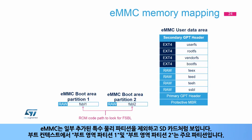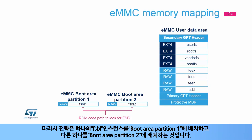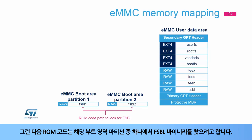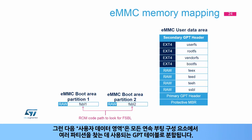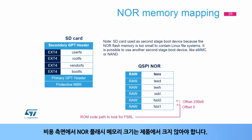An eMMC looks like an SD card, except for some additional special physical partitions. In the boot context, the boot area partition 1 and boot area partition 2 are the key partitions — the strategy consists of putting one FSBL instance in boot area partition 1 and another in boot area partition 2. The ROM code then directly tries to find the FSBL binary in one of those boot area partitions. The user data area is partitioned with a GPT table used by all consecutive boot components to find the several partitions.